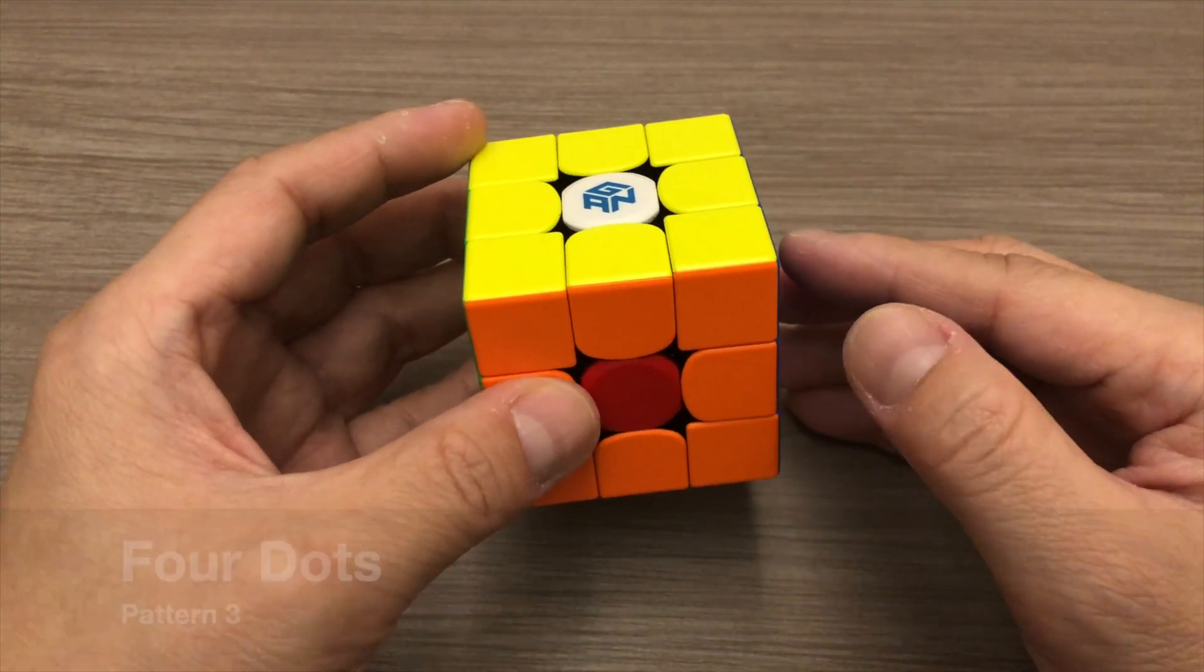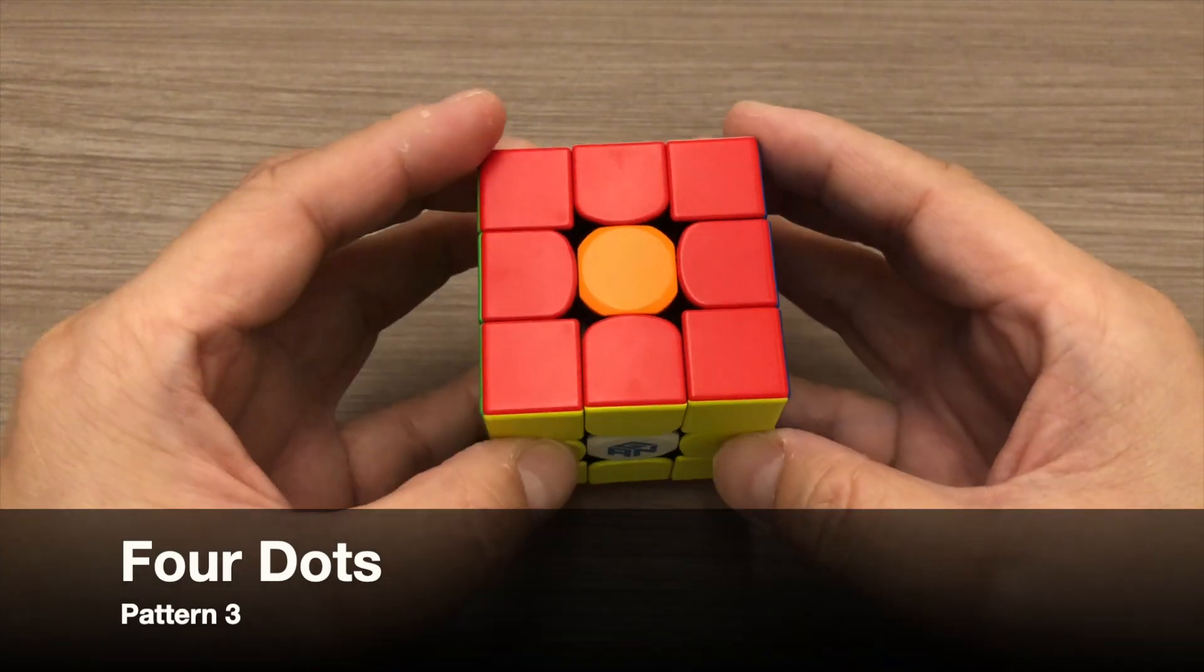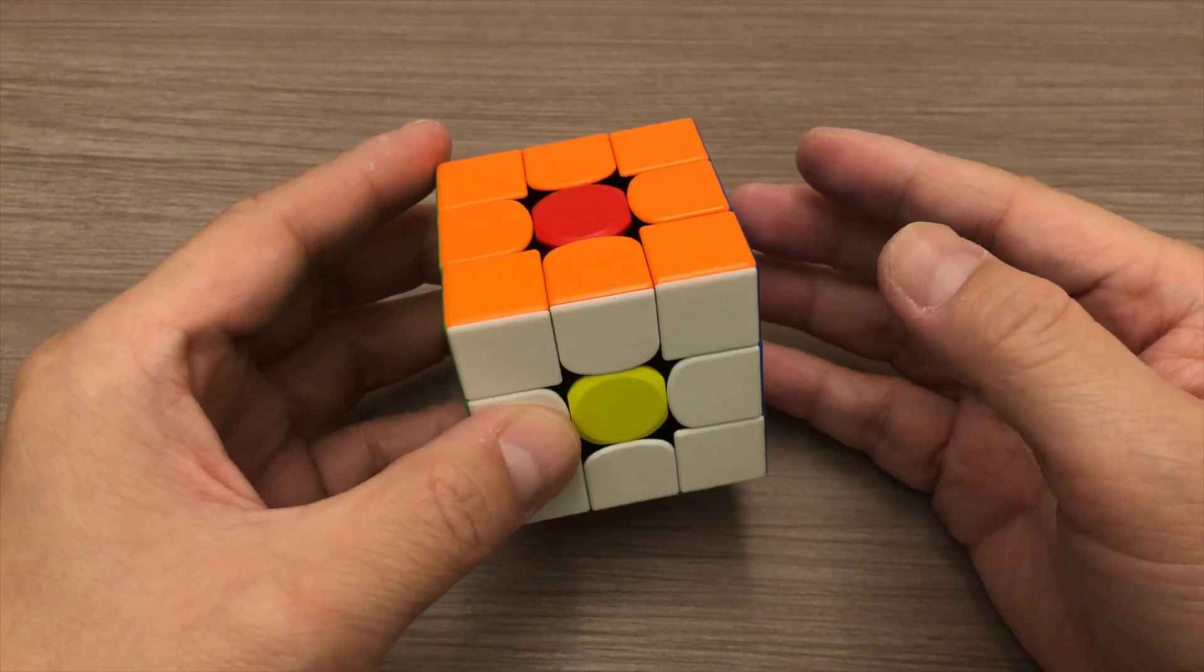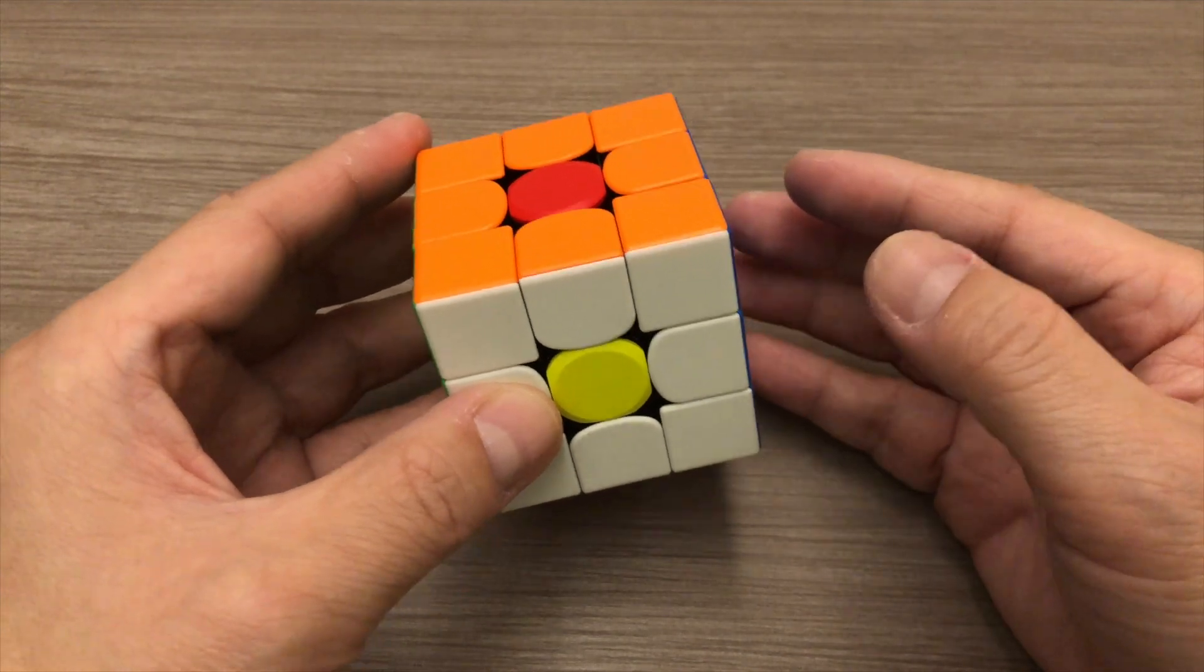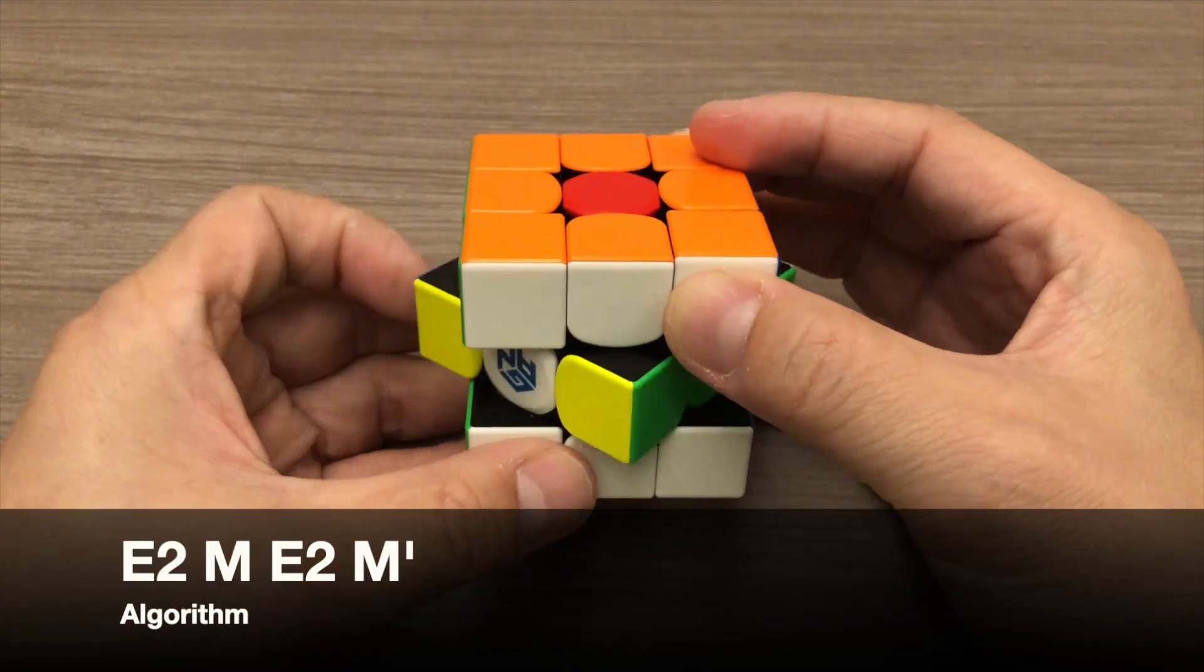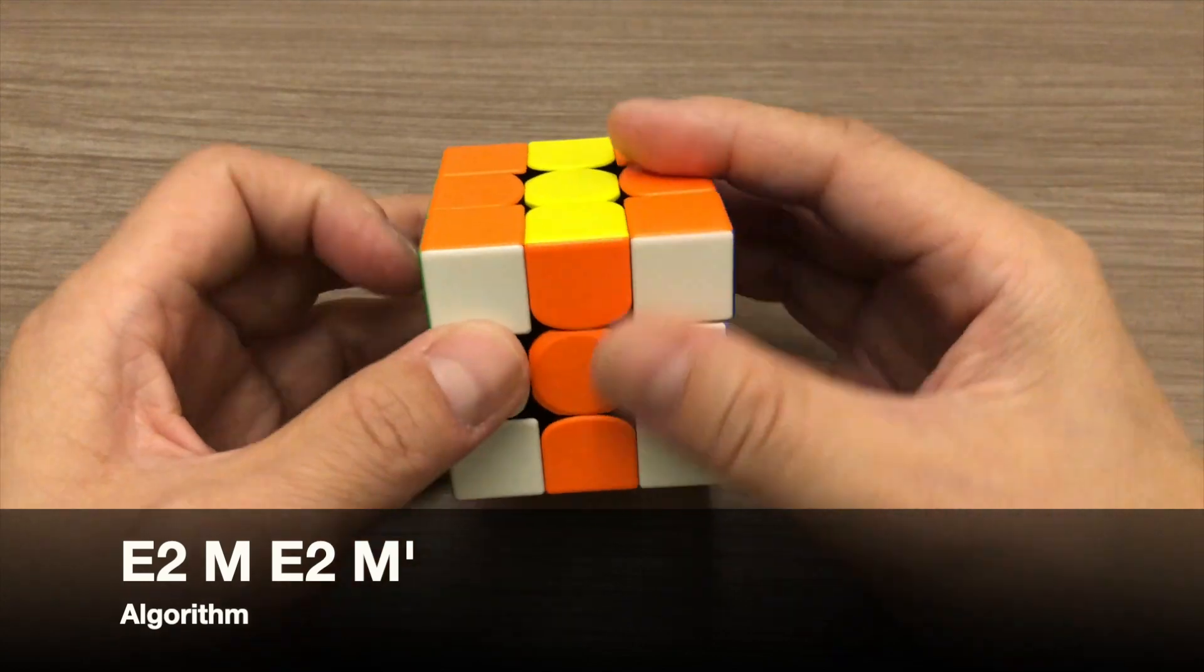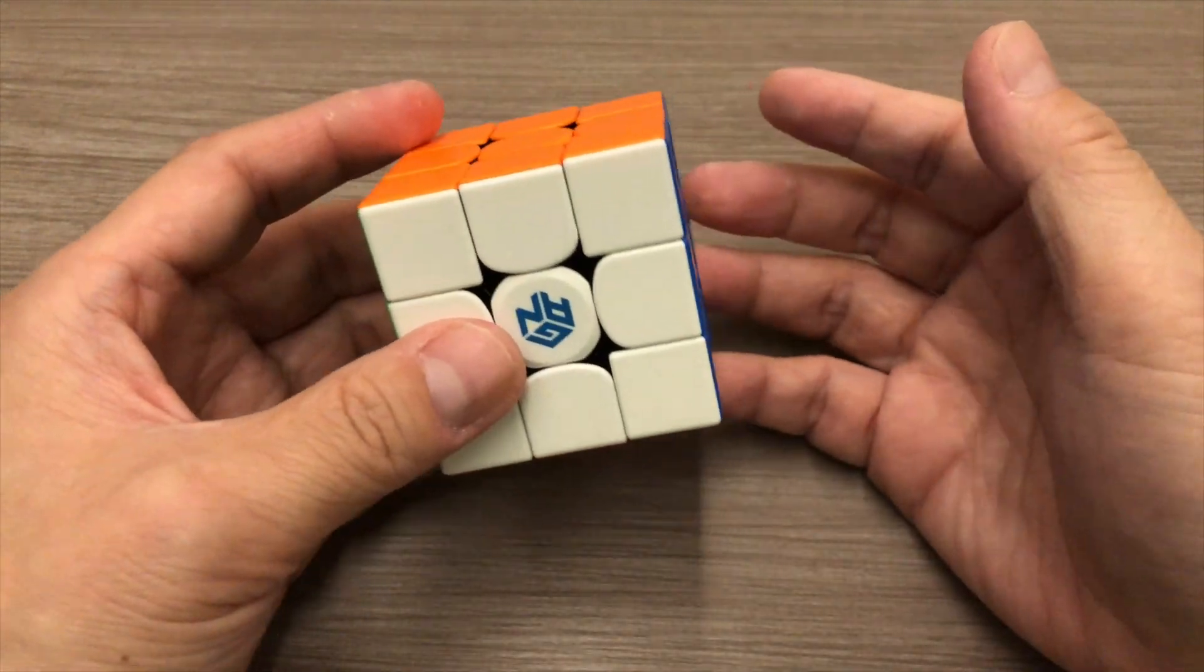The last pattern is one with four dots on the cube. This pattern is the easiest to identify and in order to solve it, you will apply this algorithm: E2, M, E2, M'. The cube is now solved.